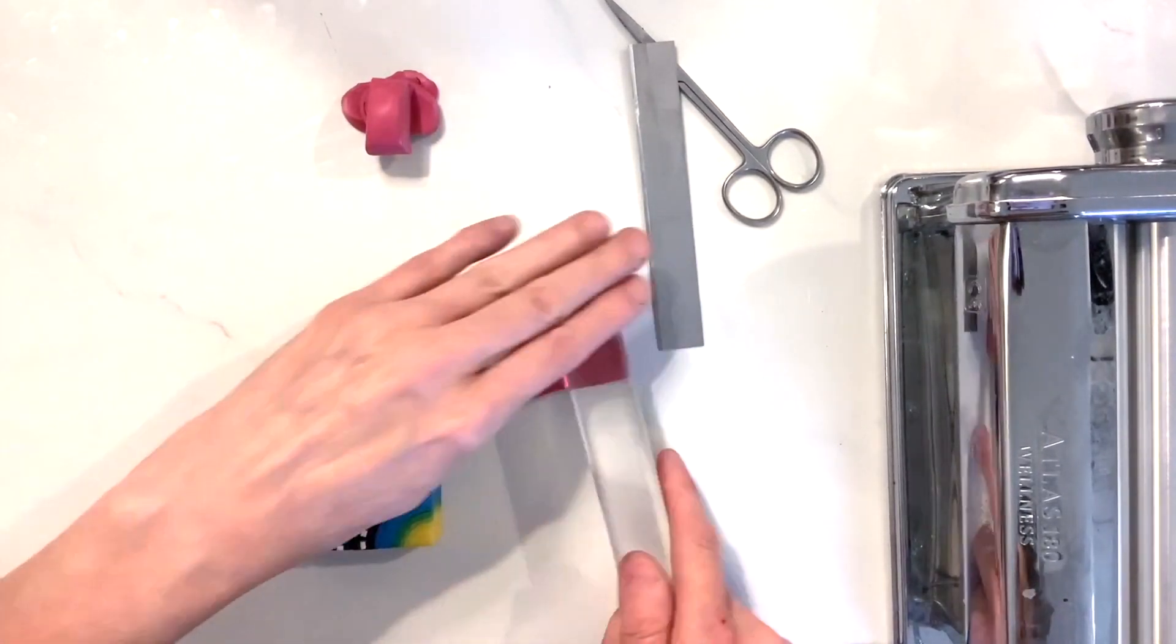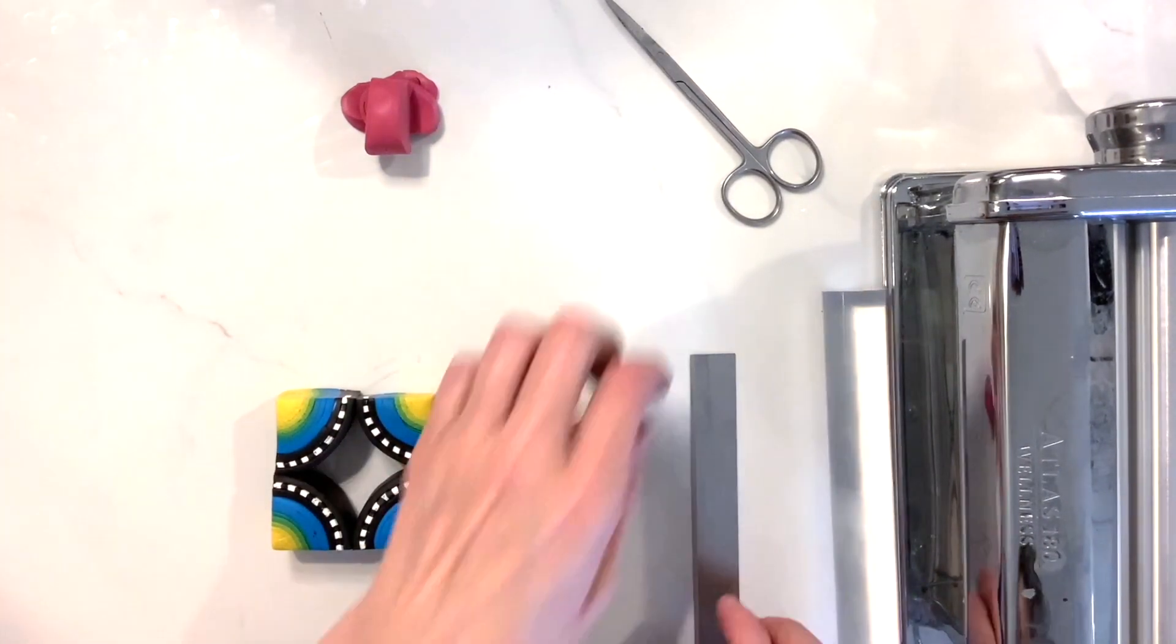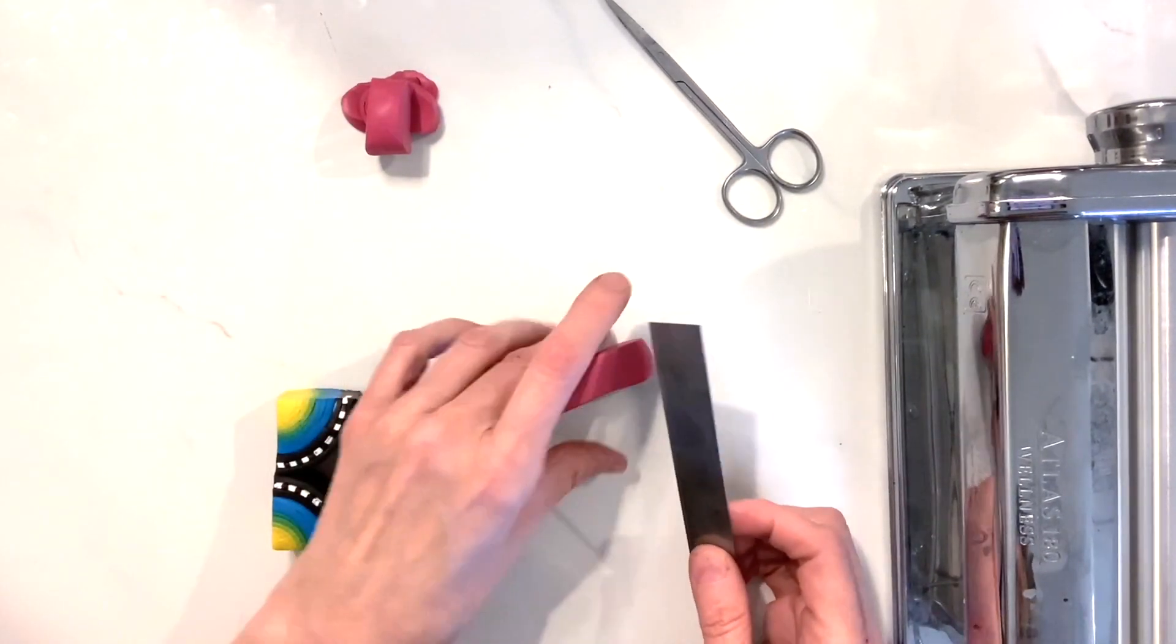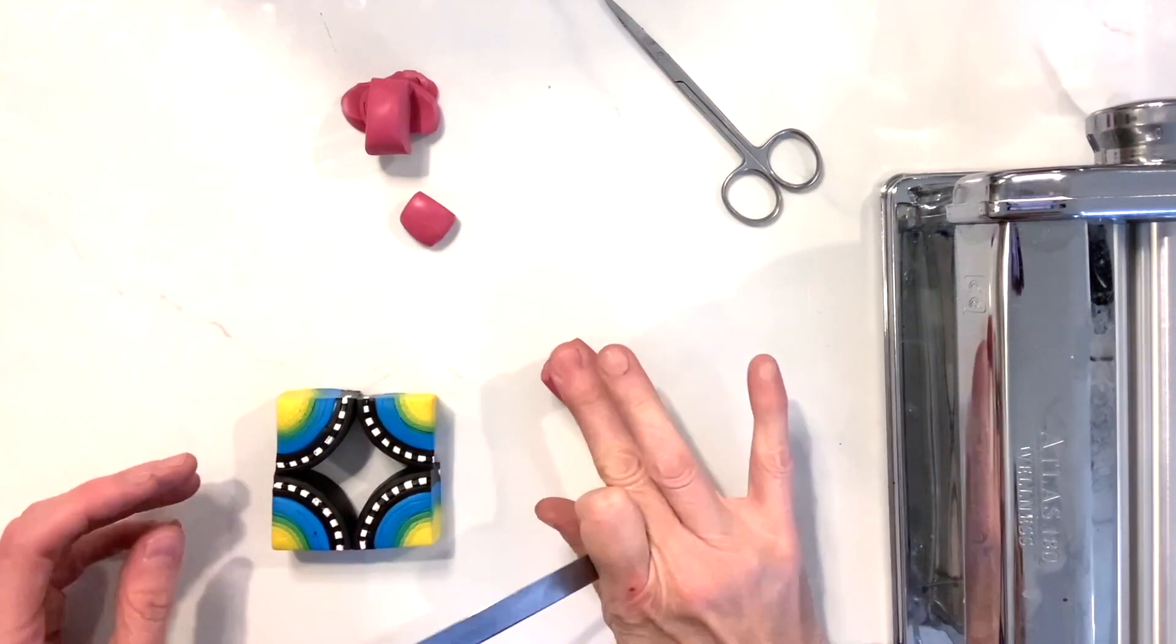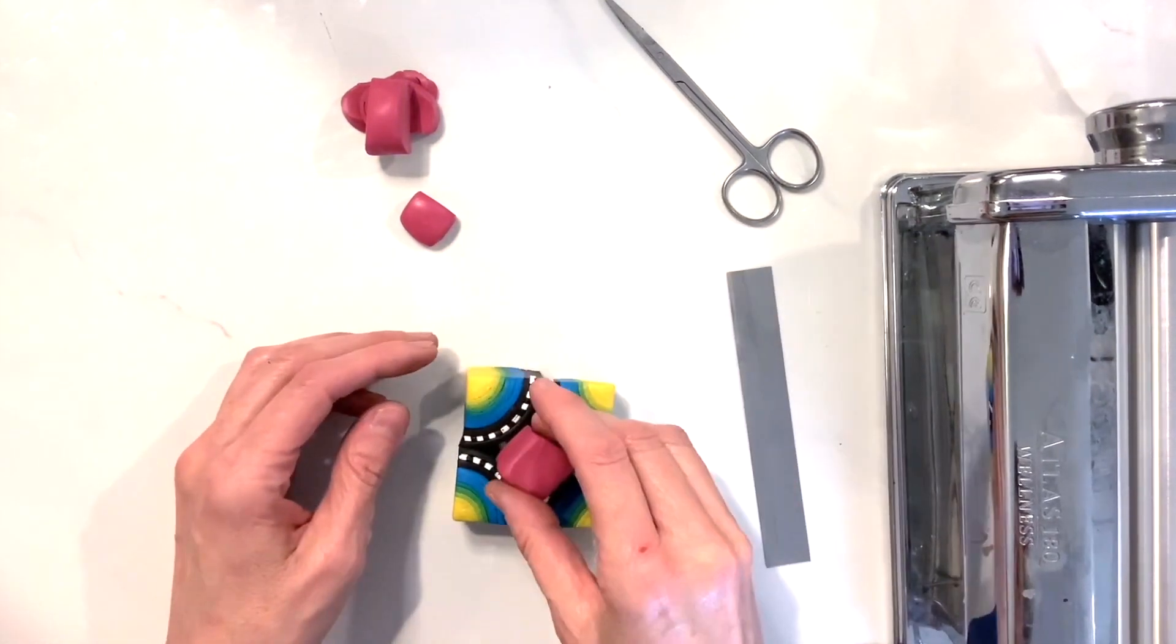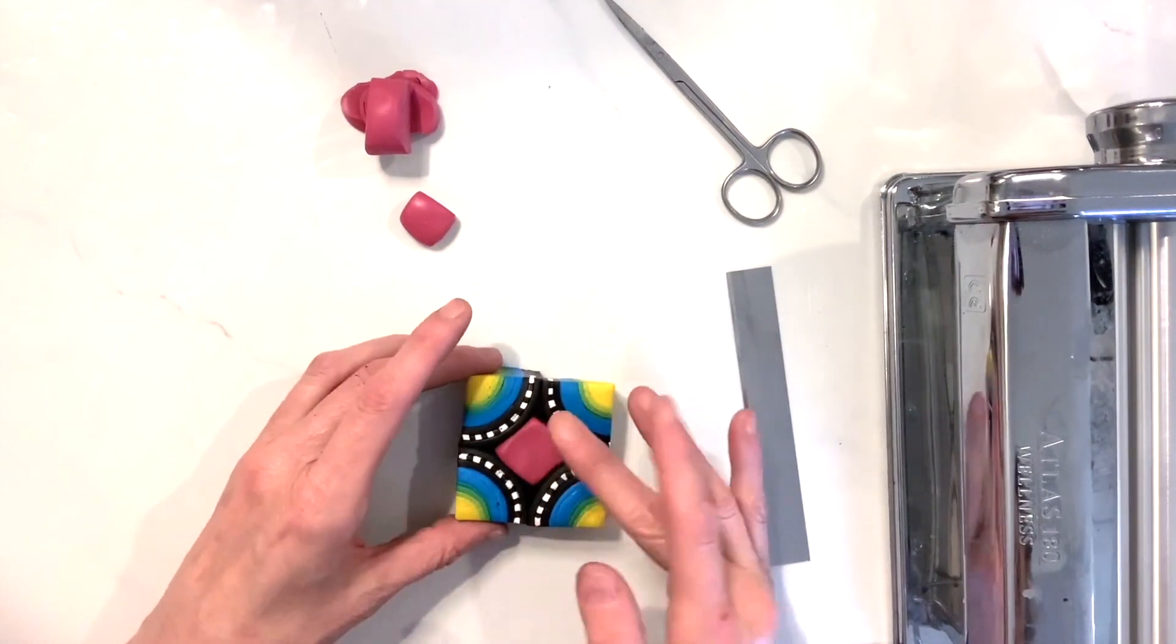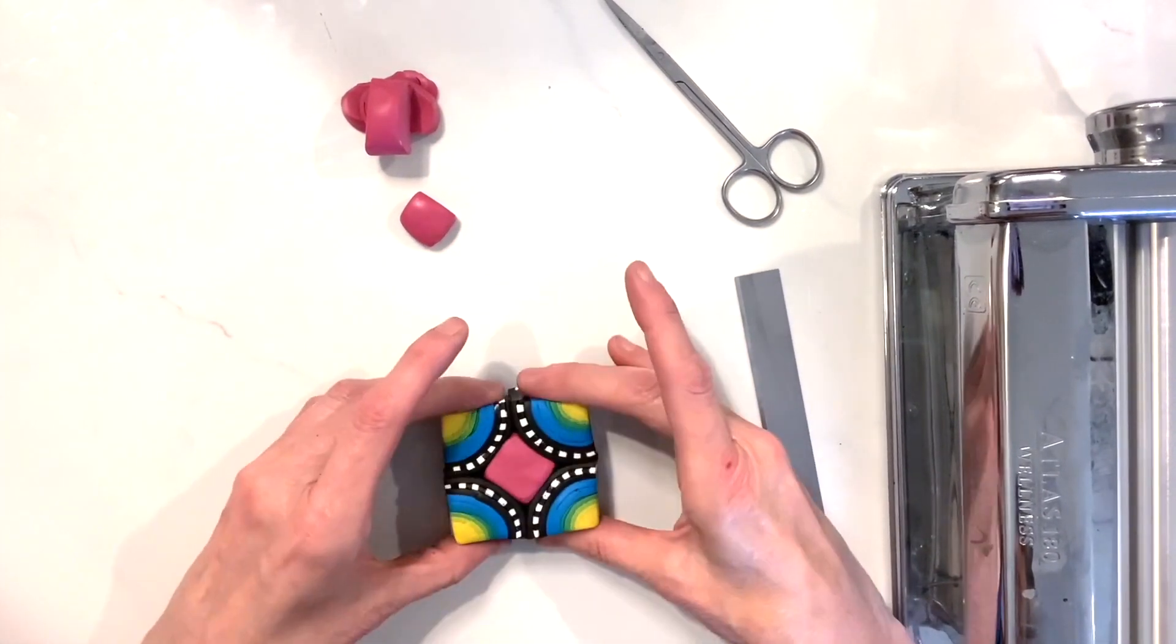Use your acrylic roller to make it nice and neat. Then go ahead and cut off the ends if you need to, like I did here, and then put that right into the center of this cane that you're building. Once you have this, that's kind of the completion of the simple version of the checkered square bullseye cane.